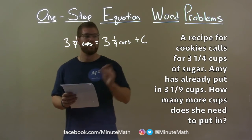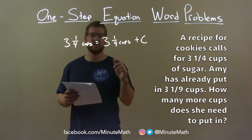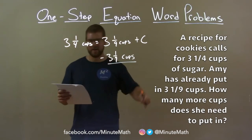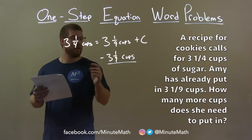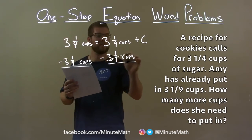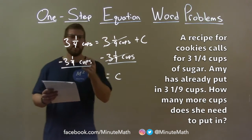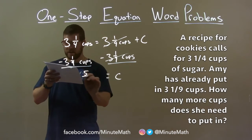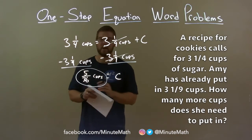We want to get C by itself. C is being added to 3 and 1/9, so the opposite of addition is subtraction. Subtract 3 and 1/9 cups from both sides — that eliminates the 3 and 1/9 on the left, giving C by itself. 3 and 1/4 minus 3 and 1/9 cups comes out to be 5/36 cups of sugar — there's our final answer.